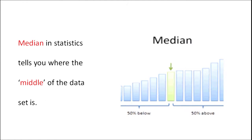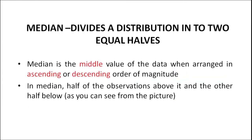Median in statistics tells you where the middle of the data set is. From the picture we can see that in a median there will be a central point, and 50% of the scores will come below the median point and 50% of the scores will come above the median point. Thus, a median divides a distribution into two equal halves. Median is the middle value of the data when arranged in ascending or descending order of magnitude.